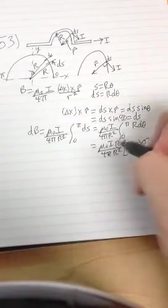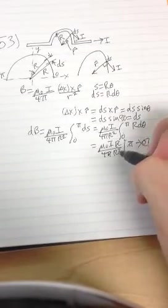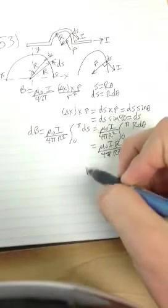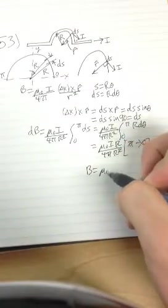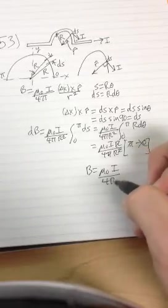The pi's cancel out, this top r and the r squared cancel out, so you get that the strength of the magnetic field is mu naught i over 4 r.